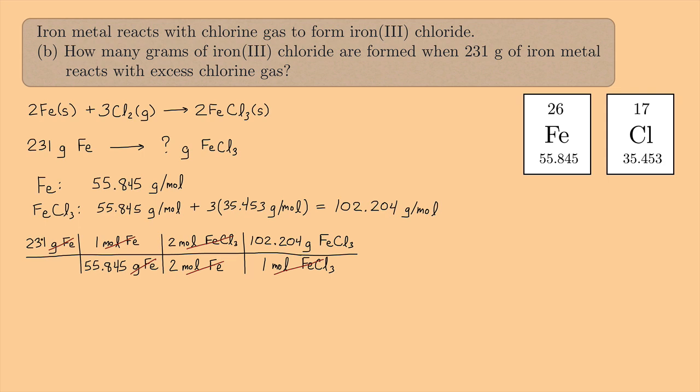So if you do this on a calculator, you would get 231 times 2 times 162.204 divided by 55.845 times 2. And there's some ones in here, I'm just ignoring those. And if you do this on the calculator, you end up getting 670.949. And this is grams of iron(III) chloride.